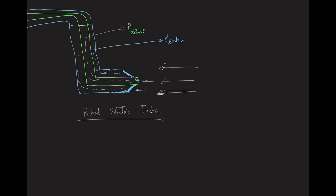This is how a pitot static tube looks. We can see there are two concentric tubes here — one is a green colored inner tube and the other is a blue colored outer tube. We can see that airflow is entering this green tube.